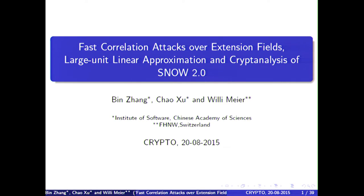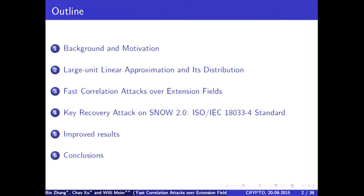This is joint work with Bin Zhang and Chao Xu. First I would like to give a brief outline. I start with background and motivation. Then the first topic will be large unit linear approximation and its distribution. The second topic is fast correlation attacks over extension fields. Then we will apply these two concepts to key recovery attack on the SNOW 2 stream ciphers, and we can improve these results, then I'll come to conclusions.